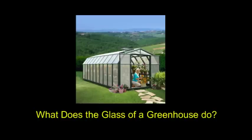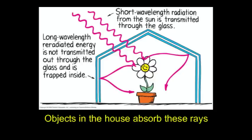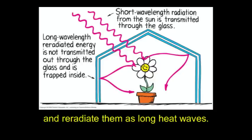What does the glass of a greenhouse do? It lets the short solar rays pass through. Objects in the house absorb these rays and re-radiate them as long waves.